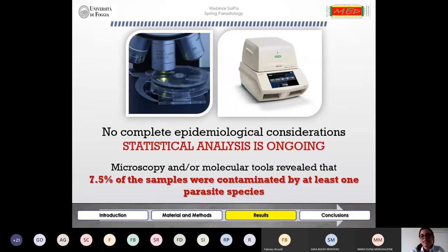At the moment, it is not possible to do complete epidemiological considerations on our data as the statistical analysis is still ongoing. However, what we can tell, summing up our results, is that microscopy and/or molecular tools have revealed that 7.5 percent of our samples were contaminated by at least one parasite species.